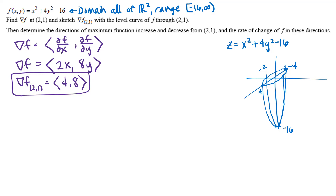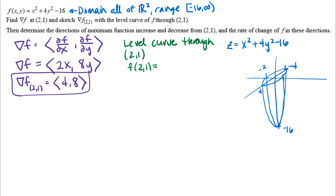First, I'll think about the level curve through the point (2, 1). A level curve is where you have a constant function output. Here we're given a point and need to find the level curve through it. One way to do that is to evaluate the function at (2, 1) — that gives us the constant output. We're then interested in all the x-y points that have this same function output as the point (2, 1).